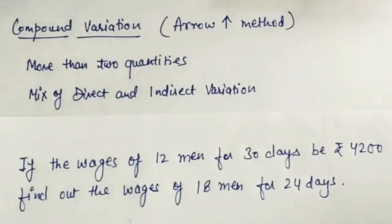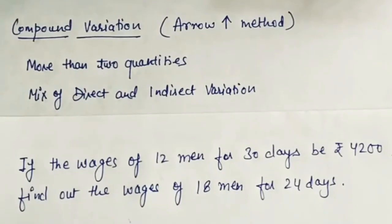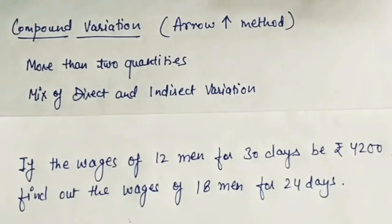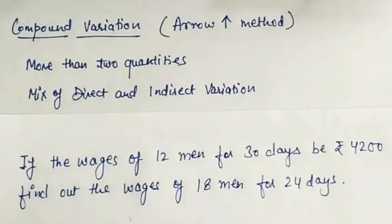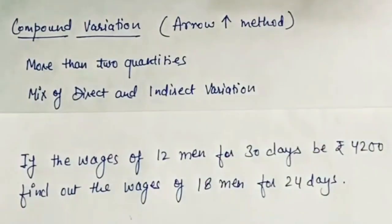Compound variation is a mixture of direct and indirect variation. In this case, you can have both direct and direct variation, or indirect and indirect variation. So there are three cases. If there is a mixture of any variation, we can solve it by using the arrow method.